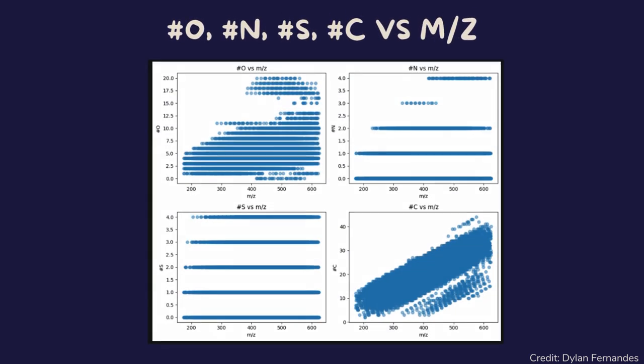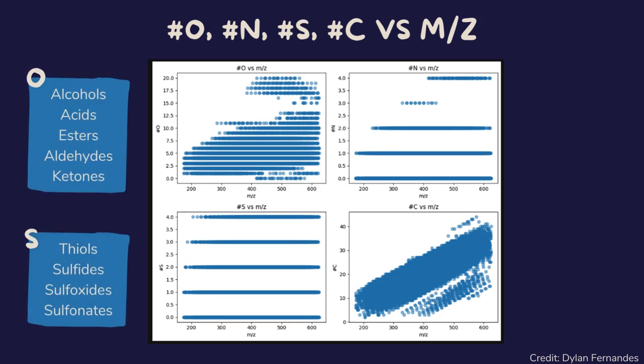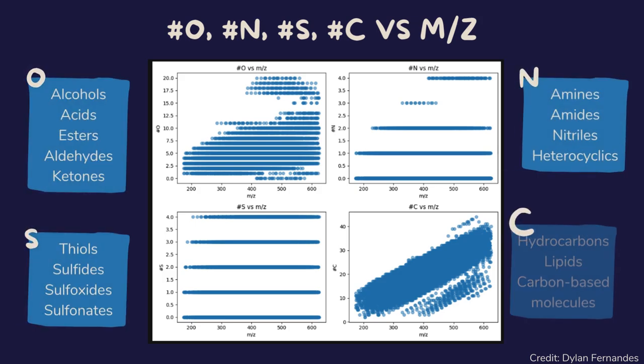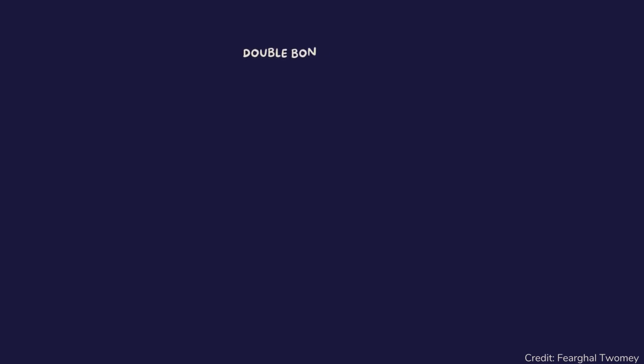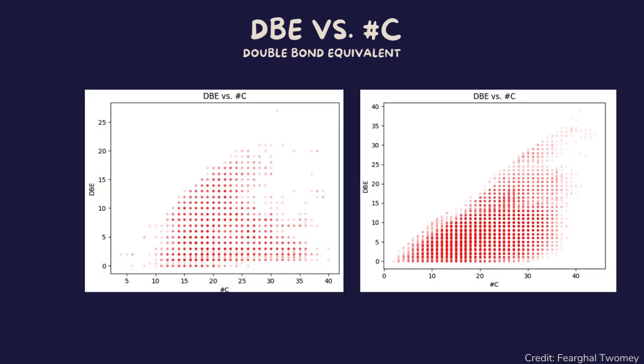Plotting the number of specific atoms against the mass-to-charge ratio provides a detailed view of how these elements are distributed across different molecular species in a sample. A double bond equivalent, DBE for short, versus number of carbon atoms plots help to visualize the relationship between the degree of unsaturation in a molecule and its size.